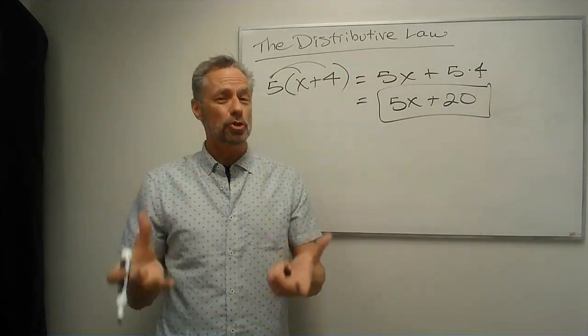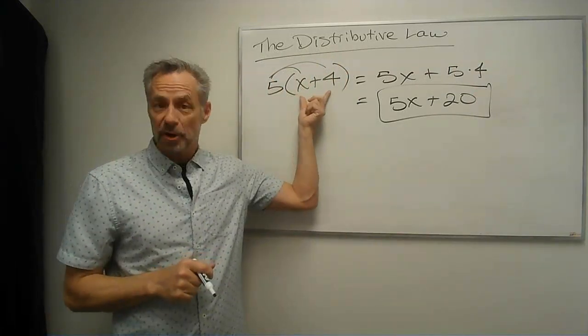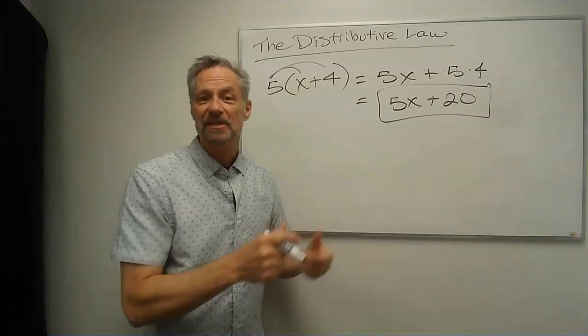And we'd often write it as 5x plus 20. And so that's how we're usually going to use the distributive property, is when there's a variable inside here. And we'll use this to do things later in the course.